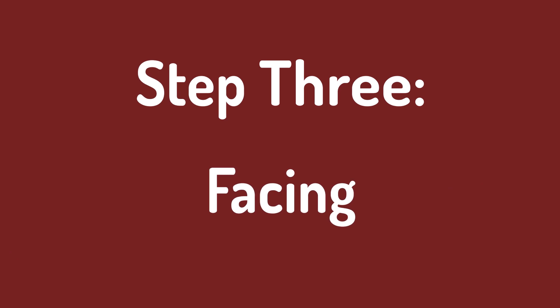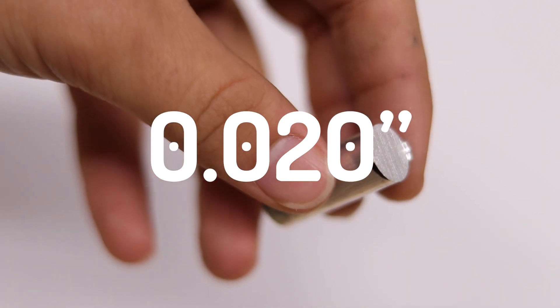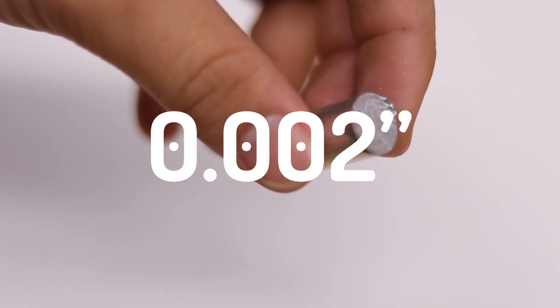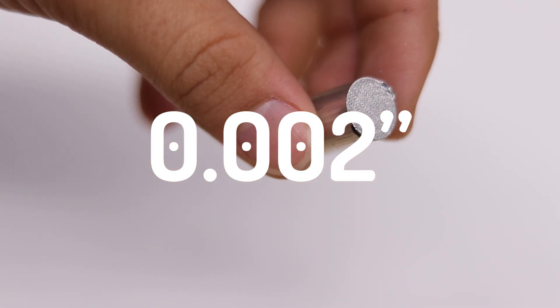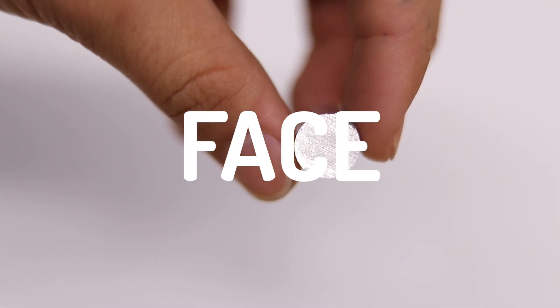Step 3, Facing. Standoffs seem to hold precision to about 20 thousandths. For comparison, a human hair is roughly 2 thousandths. The saw creates an uneven cut, and before we can accurately measure this, we need to face both ends. Facing removes a tiny amount of material to flatten out the uneven edge.